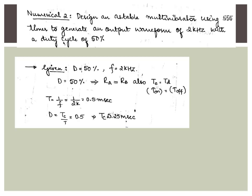Numerical 2: Design an astable multivibrator using a 555 timer to generate an output waveform of 2 kHz with a duty cycle of 50%. Since 50% duty cycle is specified, Ra and Rb must be equal, meaning charging time equals discharging time. The time period is the inverse of frequency: T = 1/2000 = 0.5 milliseconds. From the duty cycle, the charging time is 0.5 × 0.5 = 0.25 milliseconds.